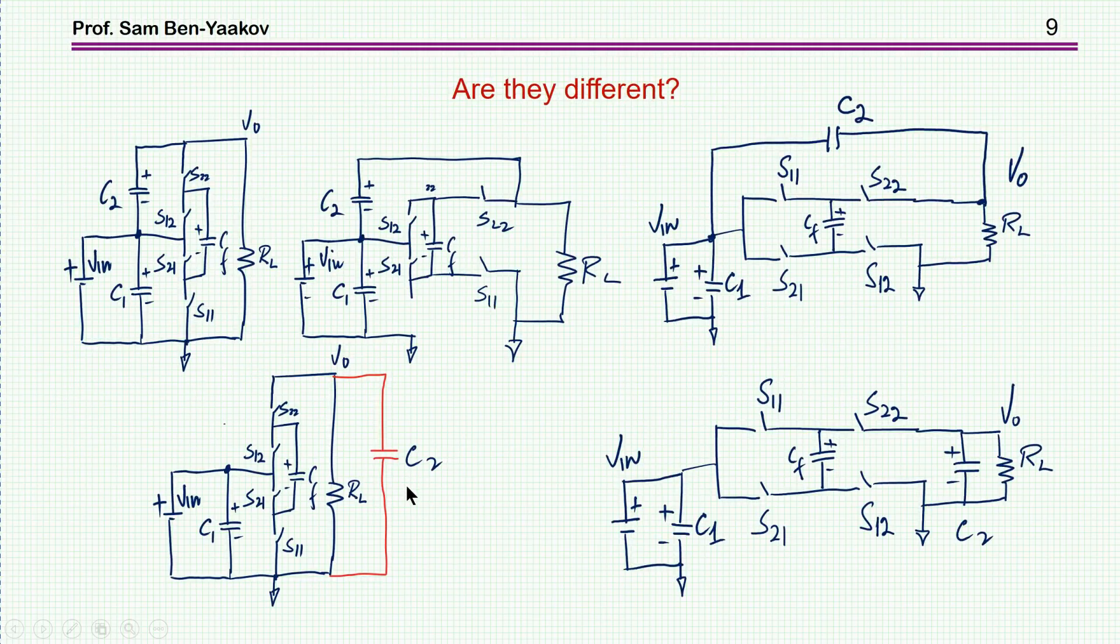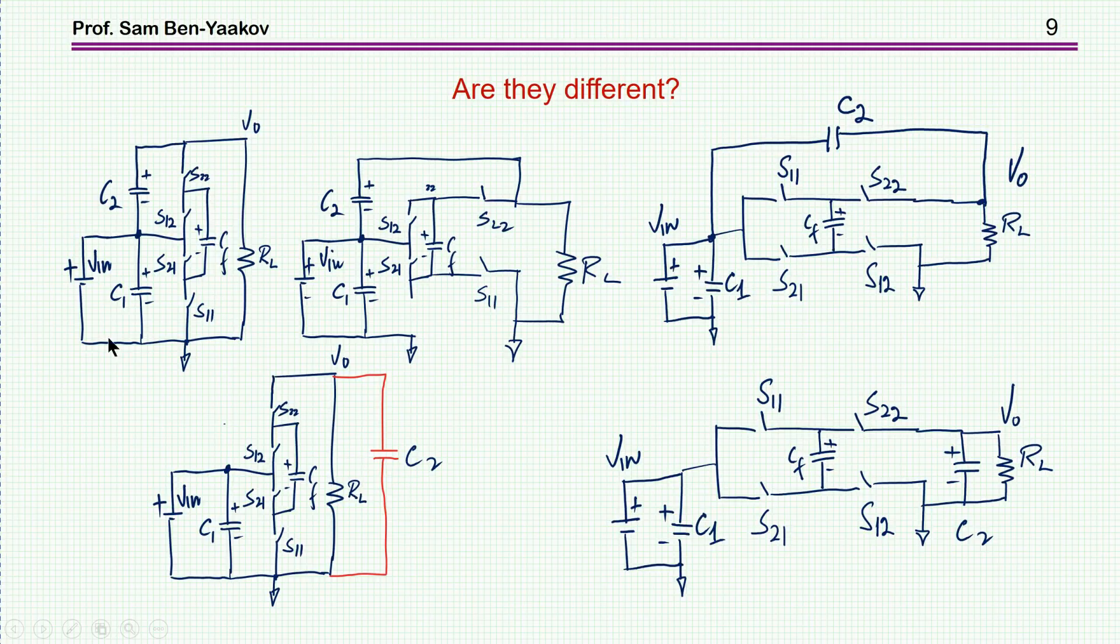Now the question is, is there a difference between these two? If I look at this ladder type converter and redraw it a little bit different, I sort of pull these wires like this, and then redraw it, I'm getting this. This is now very similar to the first converter that we've seen, except that rather than having the capacitor at the output, we have this capacitor connected between the output and the input. Here it is between output and ground, and here it is between output and input. If you take this capacitor and move it to the output, we get the same thing.